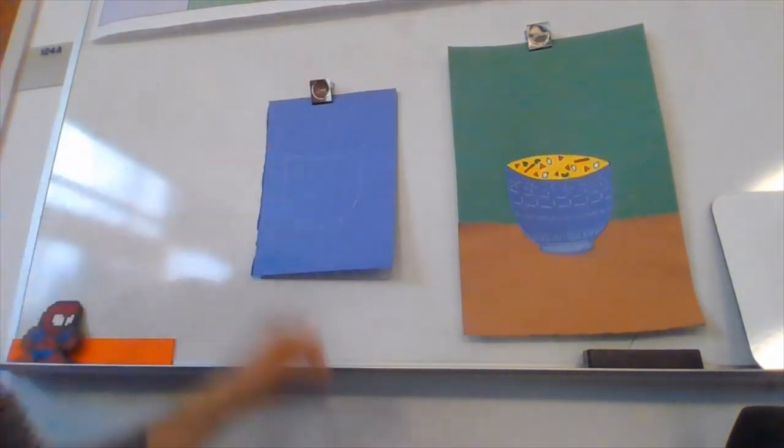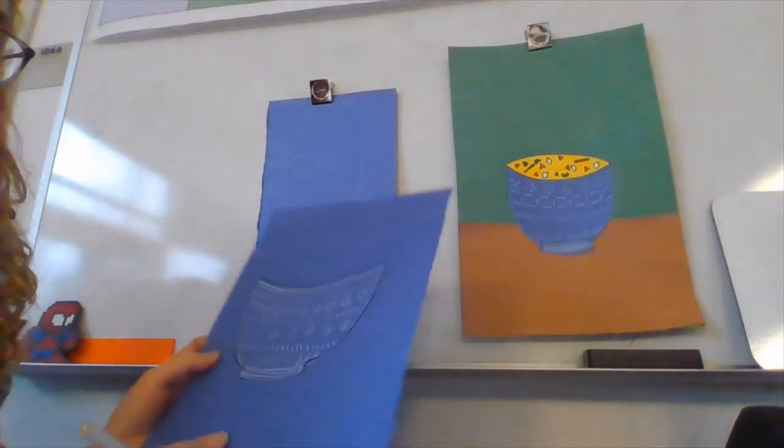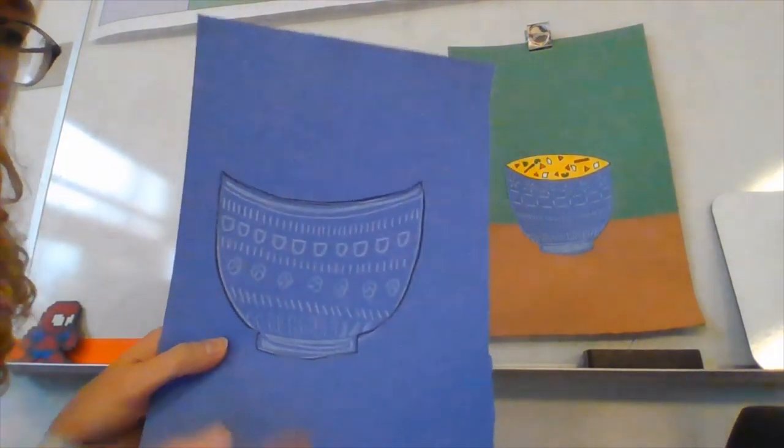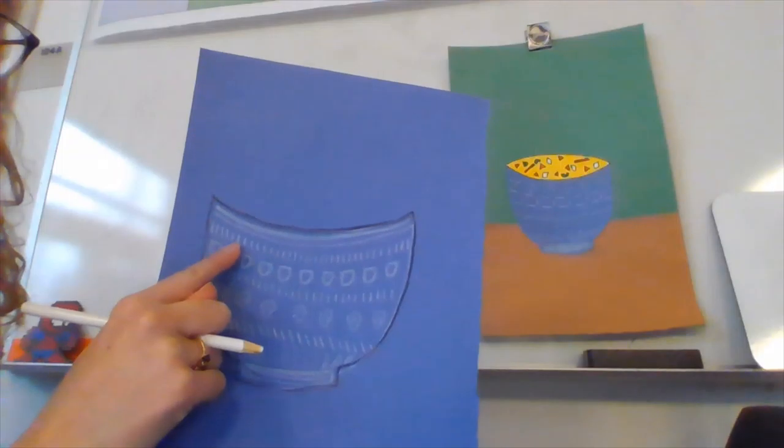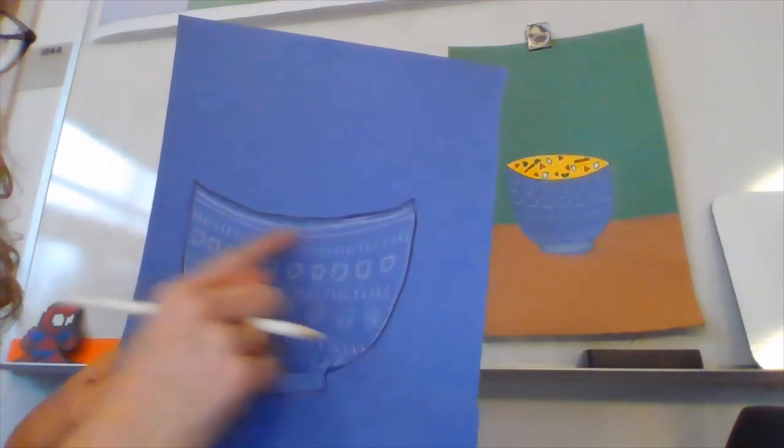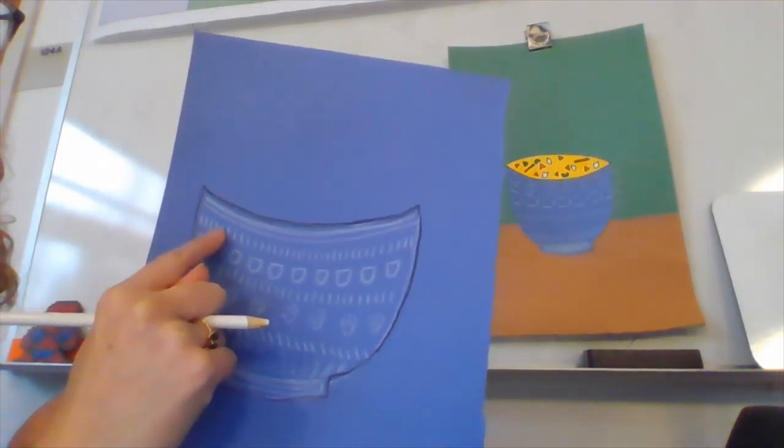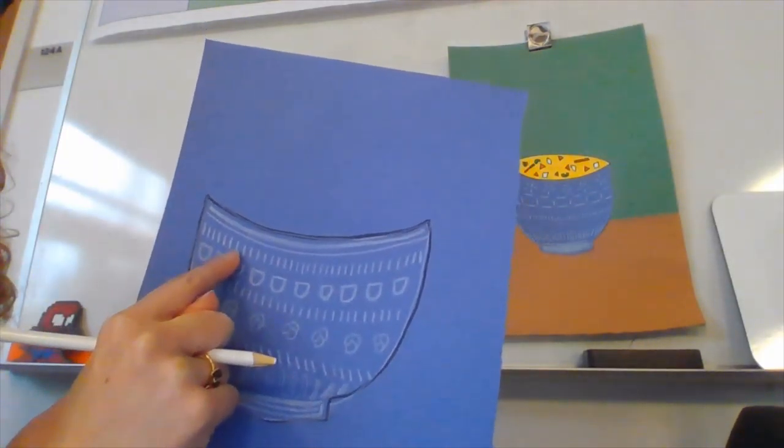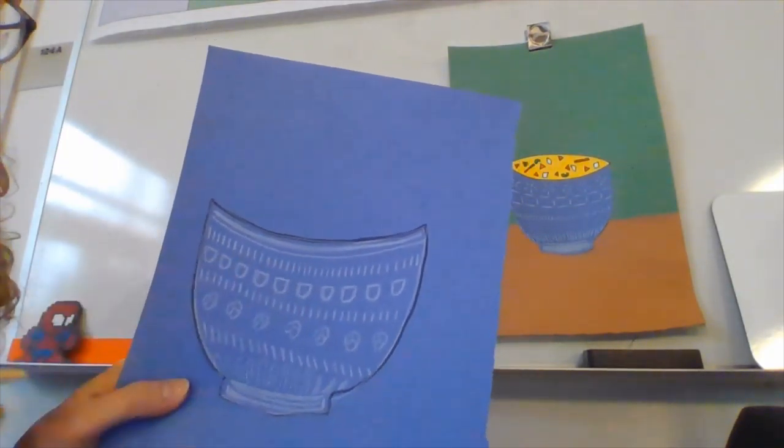One thing I want you to think about before you start, you can brainstorm as a group if that helps. Think about patterns that you could include on your bowl. So some of my patterns, or most of my patterns actually, they are the same shape. They just repeat over and over and over.